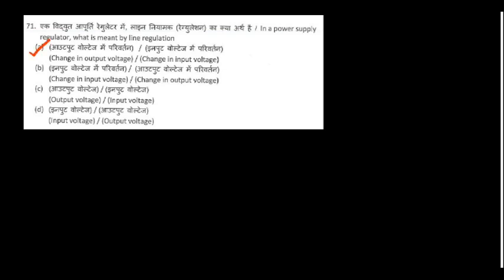In a power supply regulator, what is meant by line regulation? That is the change in output voltage divided by the change in input voltage — option A is the right answer.